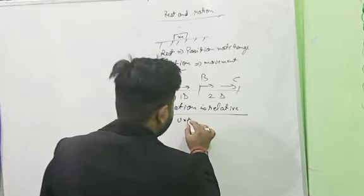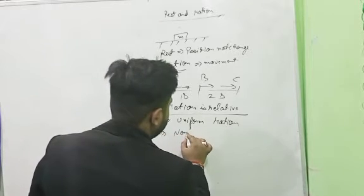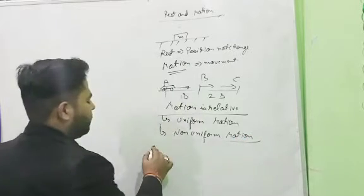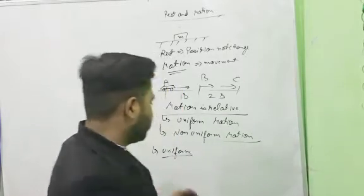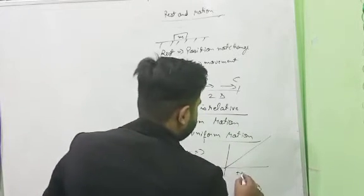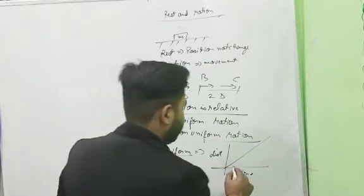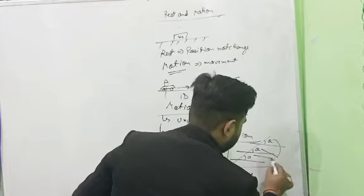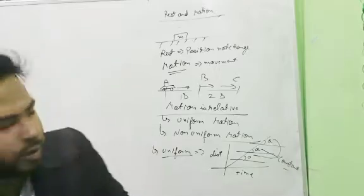There are two types of motion: uniform and non-uniform. Uniform motion is when a body covers equal distance in equal intervals of time. The graph of uniform motion is always a straight line — if the x-axis is time and y-axis is distance, the slope at each and every point is constant. This slope does not change.